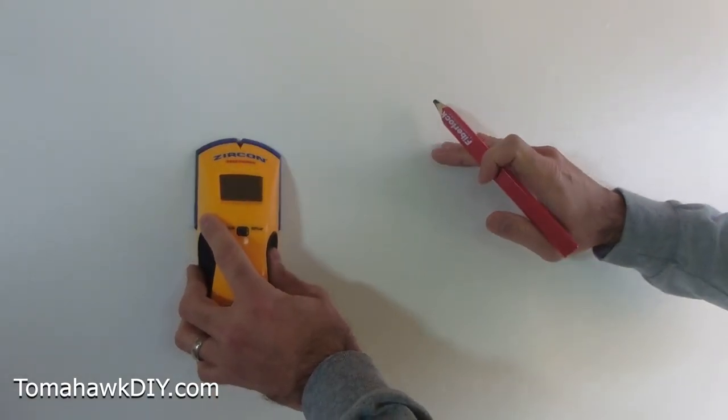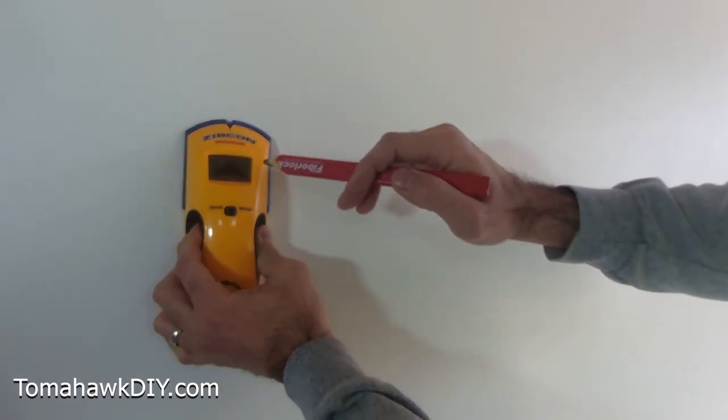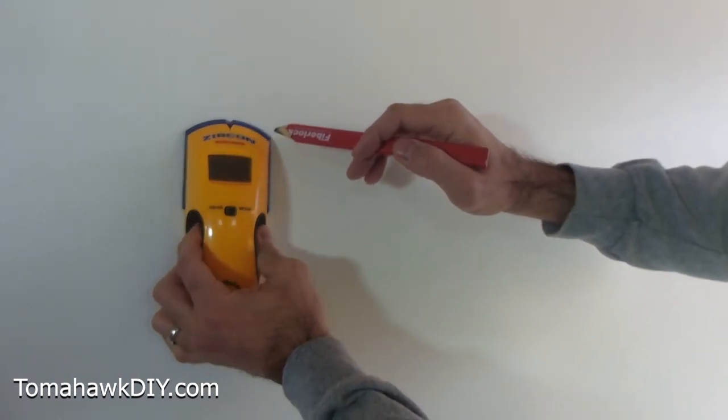Using a stud finder can be a little bit tricky. You set it against the wall. You want to press firmly. You're going to push your button. It tells me it's ready, and now I'm going to move it.